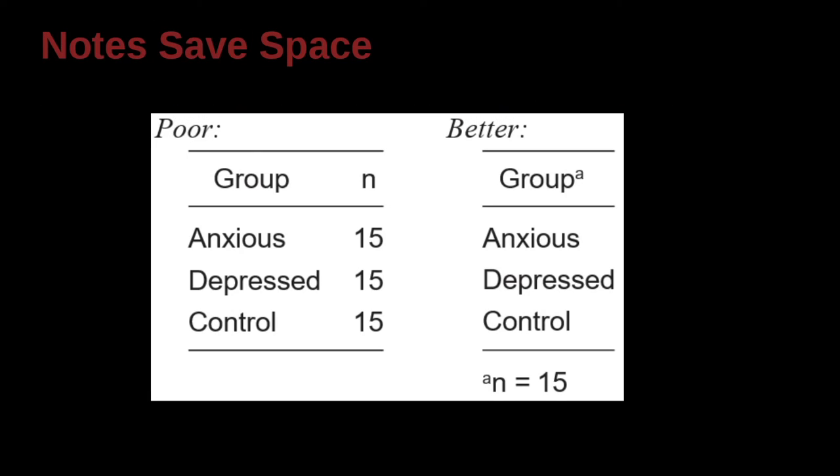So how can you use notes to save space? Here's an example. On the left side, we have this group, and then n, anxious, depressed, control, 15, 15, 15, 15. And of course, this is interesting. We have the n, which means subgroup, right? So the total n is actually 15 times 3. That's the total group, the total sample size.